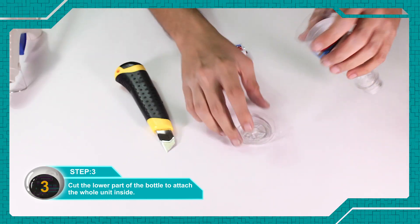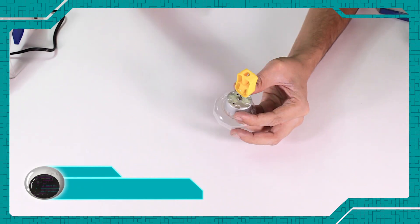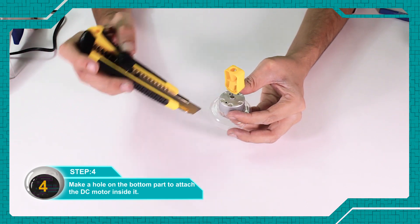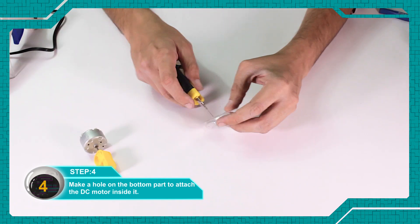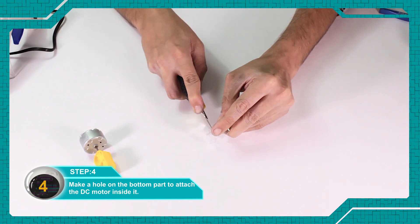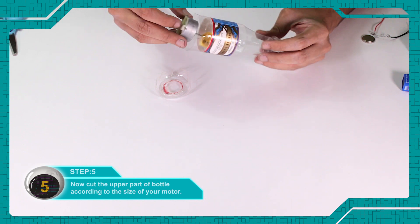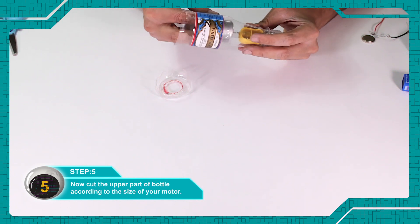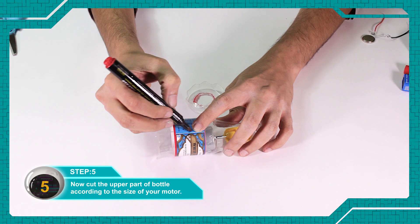Make sure the entire unit fits inside. Make a hole in the bottom part so the DC motor can be fixed inside. Now cut the upper part of the bottle according to the motor's size.